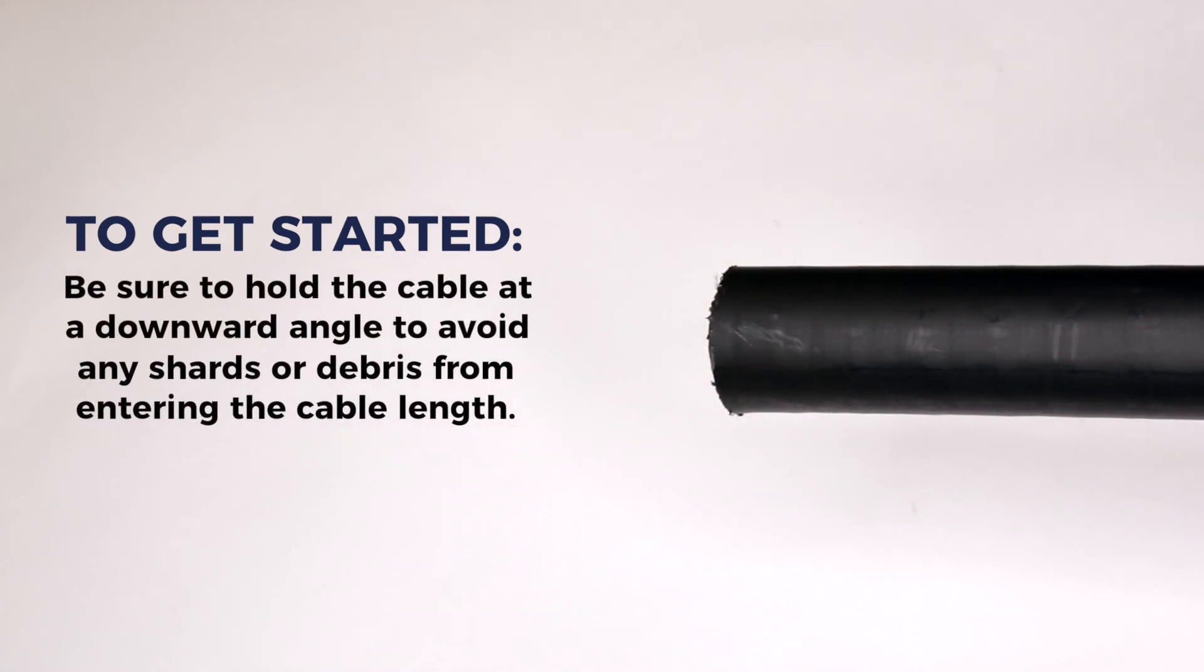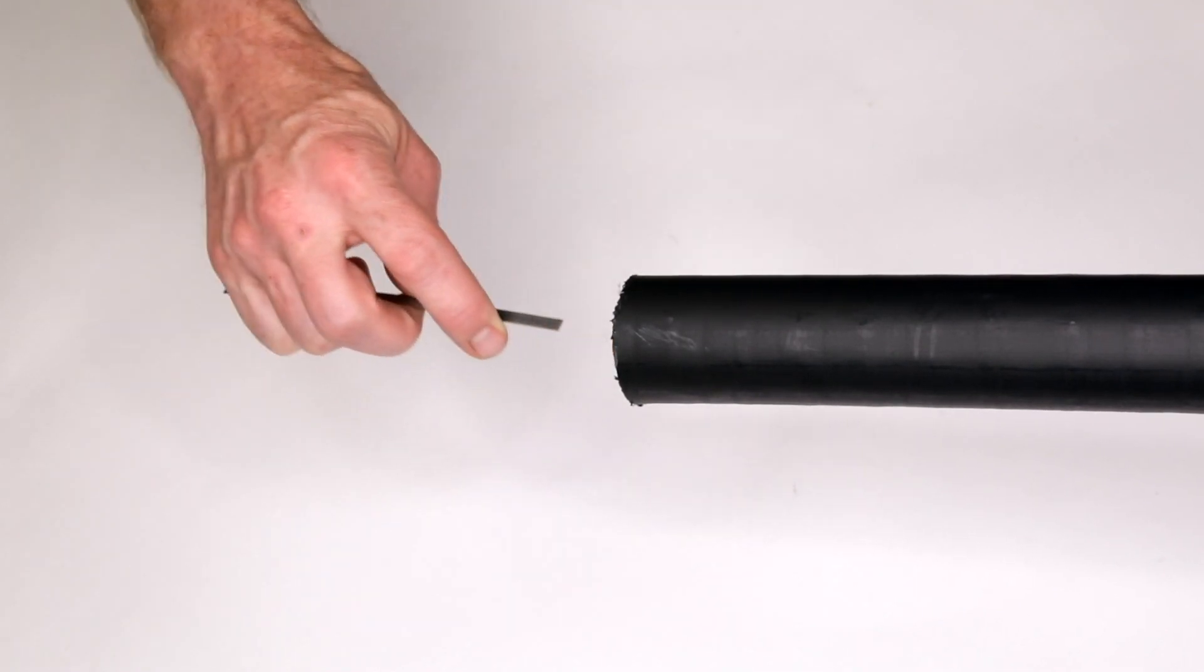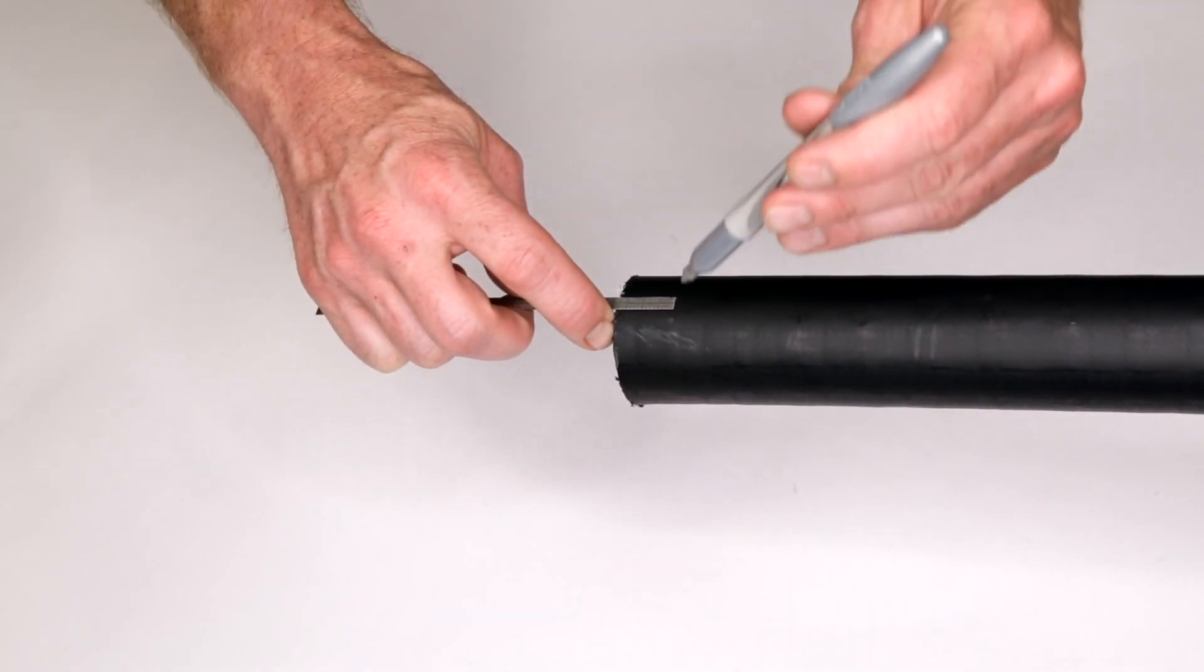Hold the cable at a downward angle throughout the entire process to avoid any shards or debris from entering the cable length. Locate the first dielectric disc by inserting a small ruler or wire into the cable end and mark the location on the jacket surface.